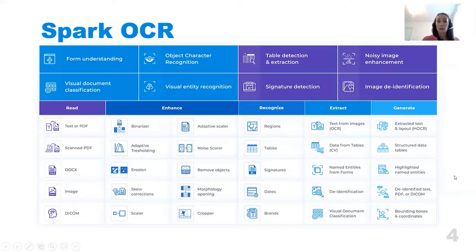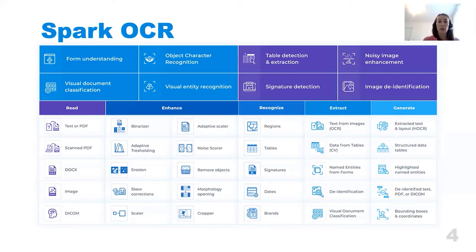As Spark OCR is an extension of Spark NLP, it supports the definition of pipelines that combine OCR and NLP transformers, models, and annotators. This is very handy when you want to quickly solve more complex tasks such as the detection of named entities on scanned documents, identification of DICOM files, or entity resolution from scanned reimbursement forms. Spark OCR is constantly evolving — we always read the latest research results published by academia and try to replicate them as production-ready models. We promise our users to always keep them up to date with the latest state-of-the-art research.